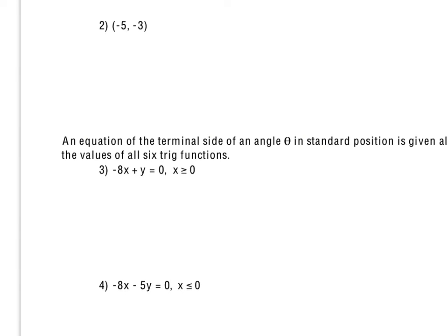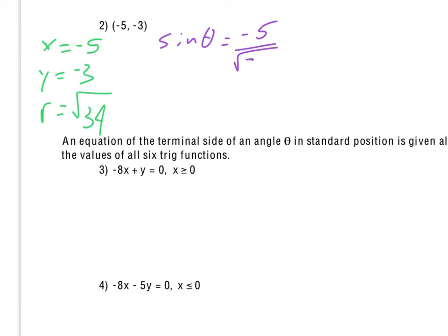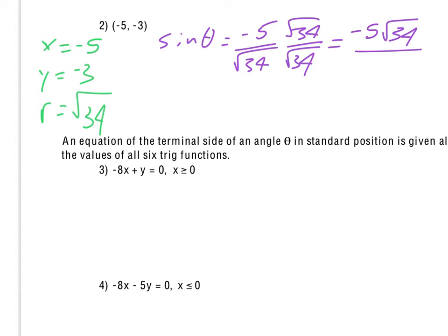Number 2 is the same type of question. We get the point (-5, -3), which will be in the third quadrant. The value of R does not work out quite so nicely here. If X is negative 5 and Y is negative 3, R ends up being the square root of 34, using R equals the square root of X squared plus Y squared. So we'll have to do some rationalizing of denominators. The cosine value, X over R, would be negative 5 over the square root of 34. We rationalize by multiplying by the square root of 34 over the square root of 34, giving negative 5 square roots of 34 over 34.